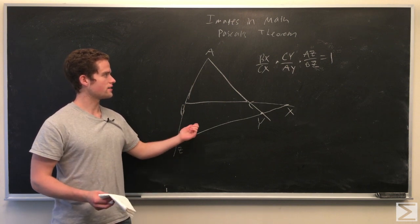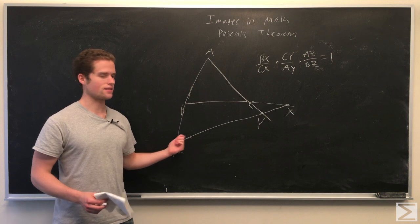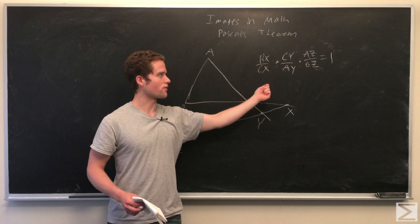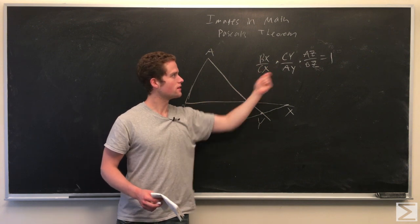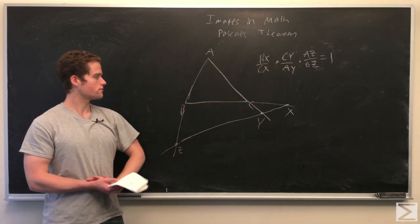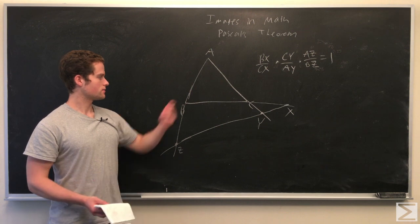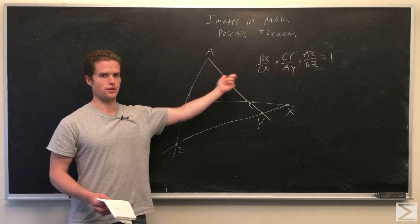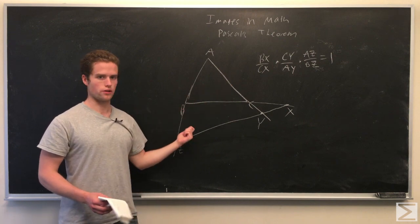A necessary and sufficient condition that three points ZYX be collinear is that BX over CX times CY over AY times AZ over BZ equal 1. So if we extend these lines and pick some points, then this will equal 1 if and only if those points are collinear.